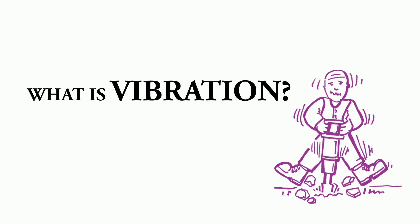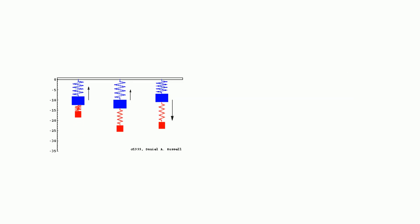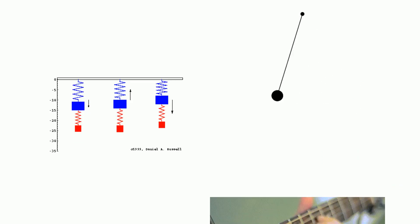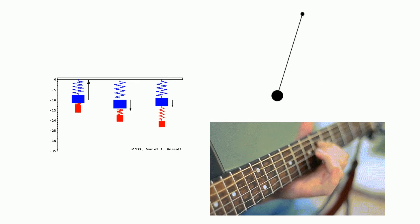What is vibration? Any motion that repeats itself after an interval of time is called vibration or oscillation. The swinging of a pendulum and the motion of a plucked string are typical examples of vibration.